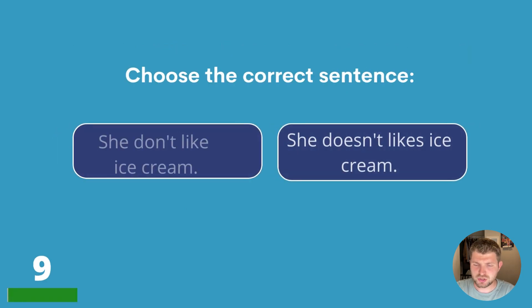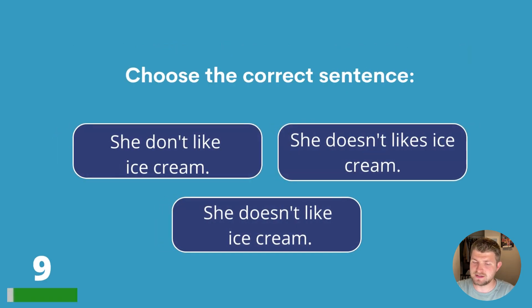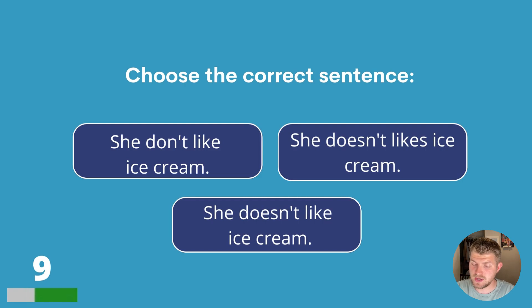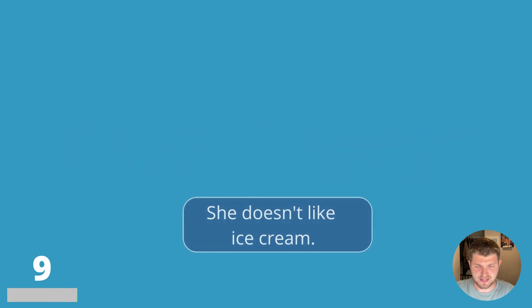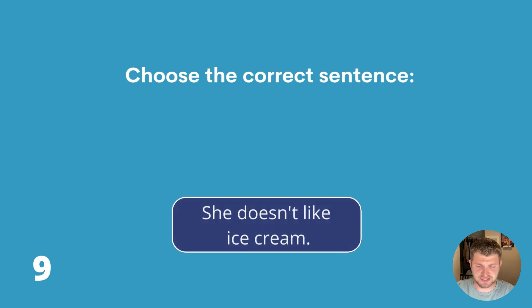Question nine. Choose the correct sentence. She don't like ice cream, she doesn't likes ice cream, or she doesn't like ice cream? The answer is she doesn't like ice cream.